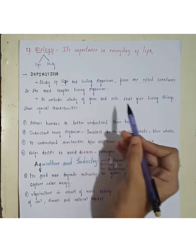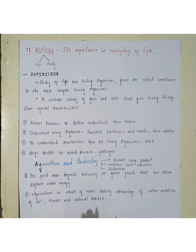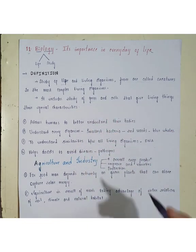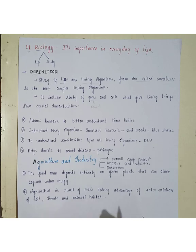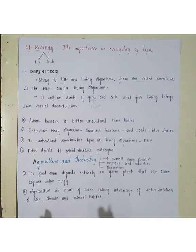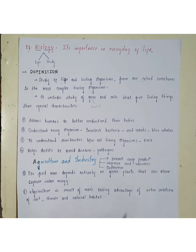Biology includes the study of genes and cells that give living things their special characteristics. Genes are nothing but DNA. If we take bacteria, it has certain types of genes and DNA, and human beings contain different types of genes. Living beings get certain characteristics based on their genes. So if we study the genes in bacteria, human beings, and plants, we can understand what DNA is present in those organisms.